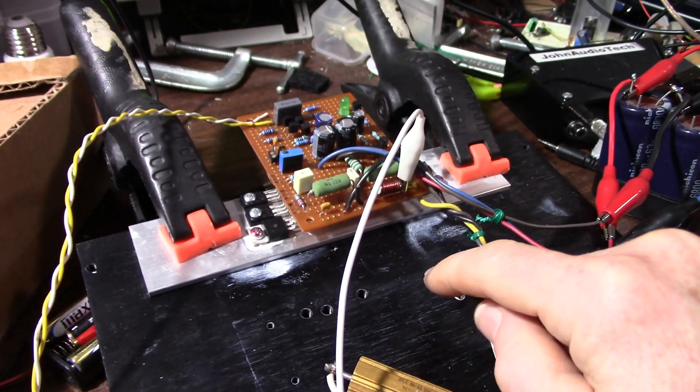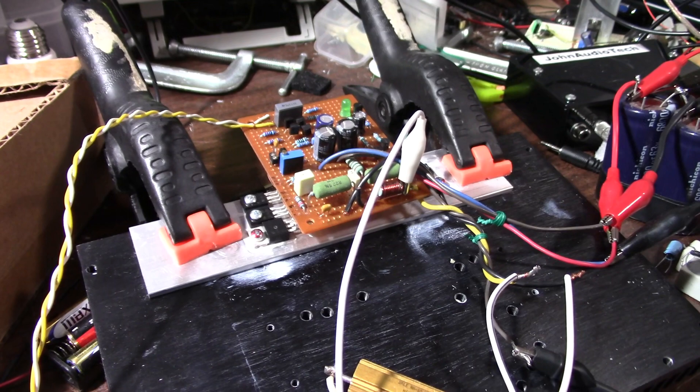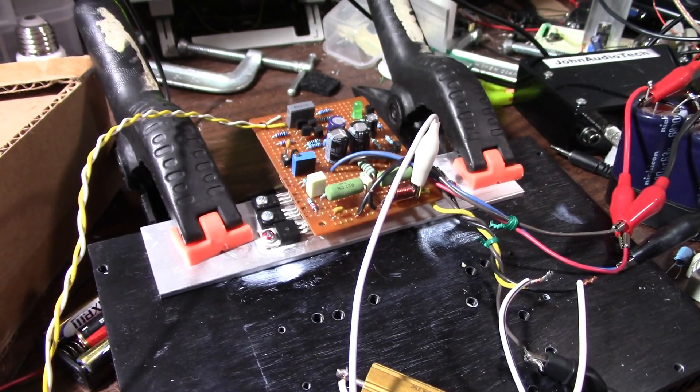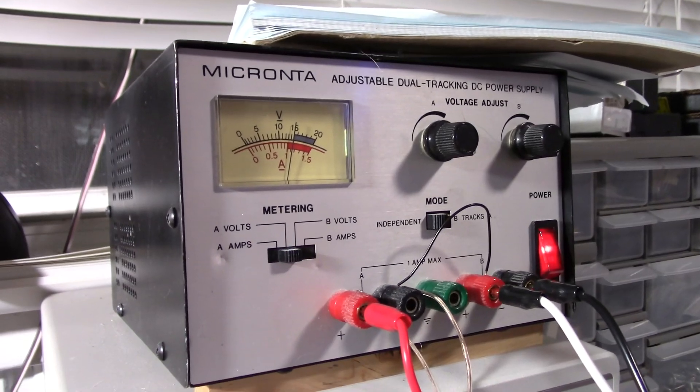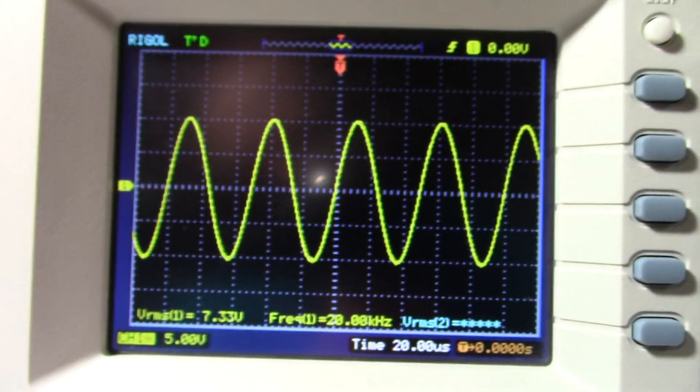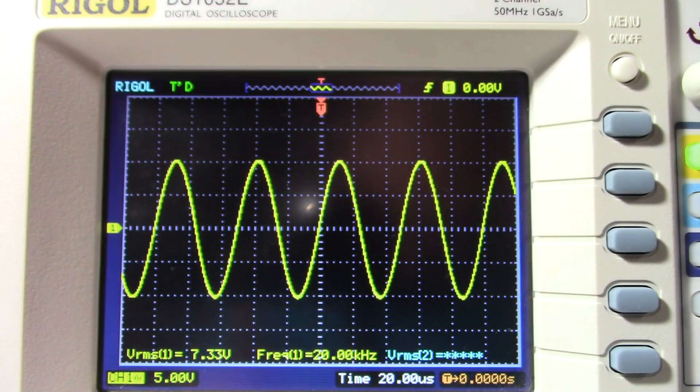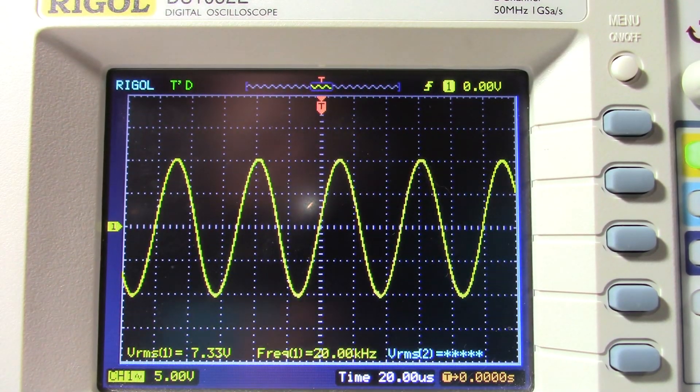Now, I wanted to answer a question somebody had about uneven supply rail voltages. What happens to the amplifier? To do this, I hooked it up to my Radio Shack dual supply, which allows me to adjust it quicker. Here's demonstration, so let me get the camera back at the scope here.